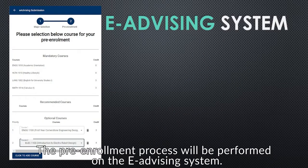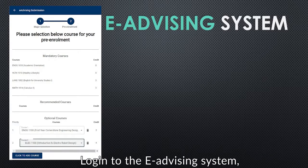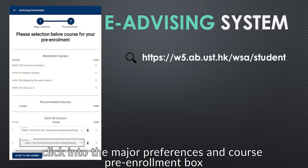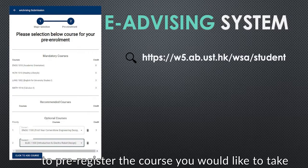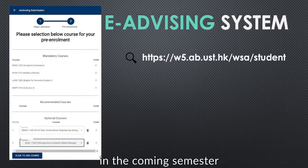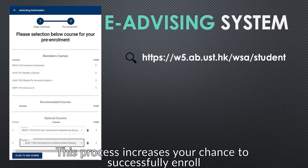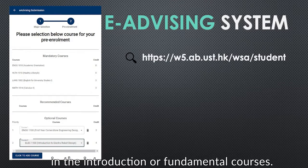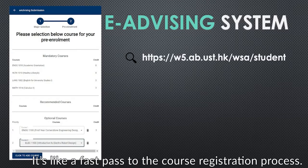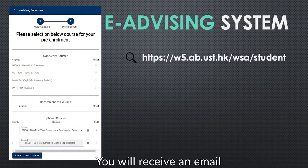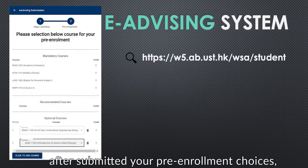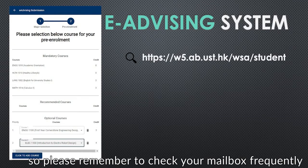The pre-enrollment process will be performed on the e-advising system. Log into the e-advising system, click into the major preferences and course pre-enrollment box to pre-register the courses you would like to take in the coming semester. This process increases your chance to successfully enroll in the introduction or fundamental courses — it's like a fast pass to the course registration process. You will receive an email after submitting your pre-enrollment choices, so please remember to check your mailbox frequently.